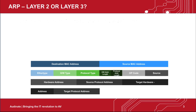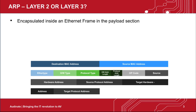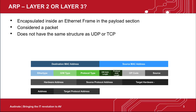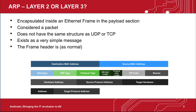An ARP message is encapsulated inside an Ethernet frame in the payload section. It can be considered a packet. It does not have the same structure as UDP or TCP. Unlike a datagram or segment handed down from the upper layers of the stack, it exists as a very simple message. The frame header is left as normal.